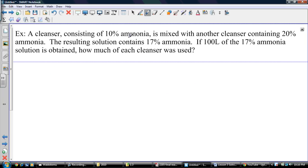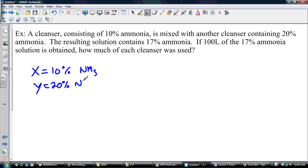All right, so a cleanser consisting of 10% ammonia is mixed with another cleanser consisting of 20% ammonia. So my X and Y in this case, X is 10% NH3, so I'm going to test my chemistry knowledge here, so that's ammonia. And then Y is 20% NH3, so I'm hoping that NH3 is ammonia. I'm not sure, but anyway, for our purposes, it works. So again, it says the resulting solution contains 17% ammonia. If 100 liters of that 17% ammonia solution is obtained, how much of each cleanser was used?